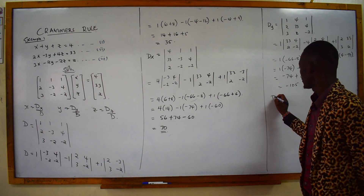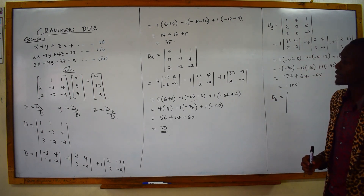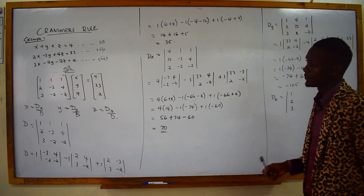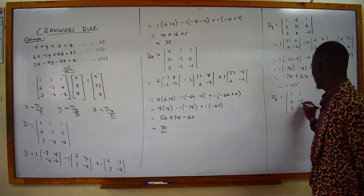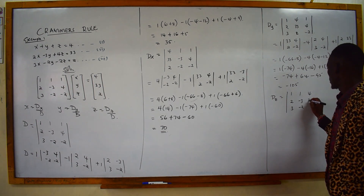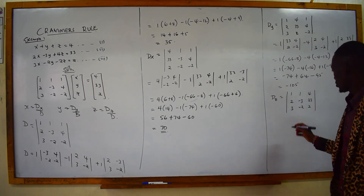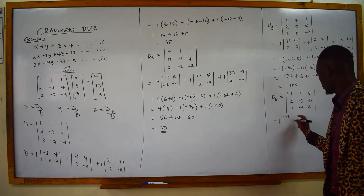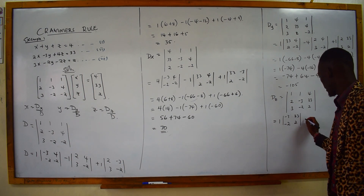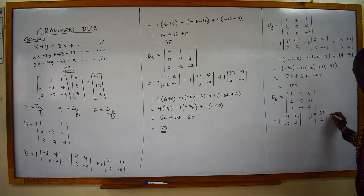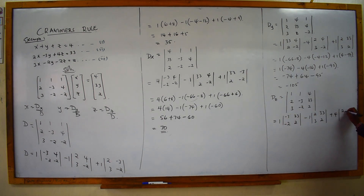Then the last term, we have Dz. We see where z is and replace it with the constant terms b1, b2, and b3. So the matrix becomes: 1, 2, 3 in the first column; the y-terms 1, negative 3, negative 2 remaining; then at the position of z we replace with 4, 33, and 2. Taking the first term 1: determinant of negative 3, 33, negative 2, 2. Then negative 1: close this column and row — you have 2, 33, 3, 2. Then plus 4: close this and that — you have 2, negative 3, 3, negative 2.